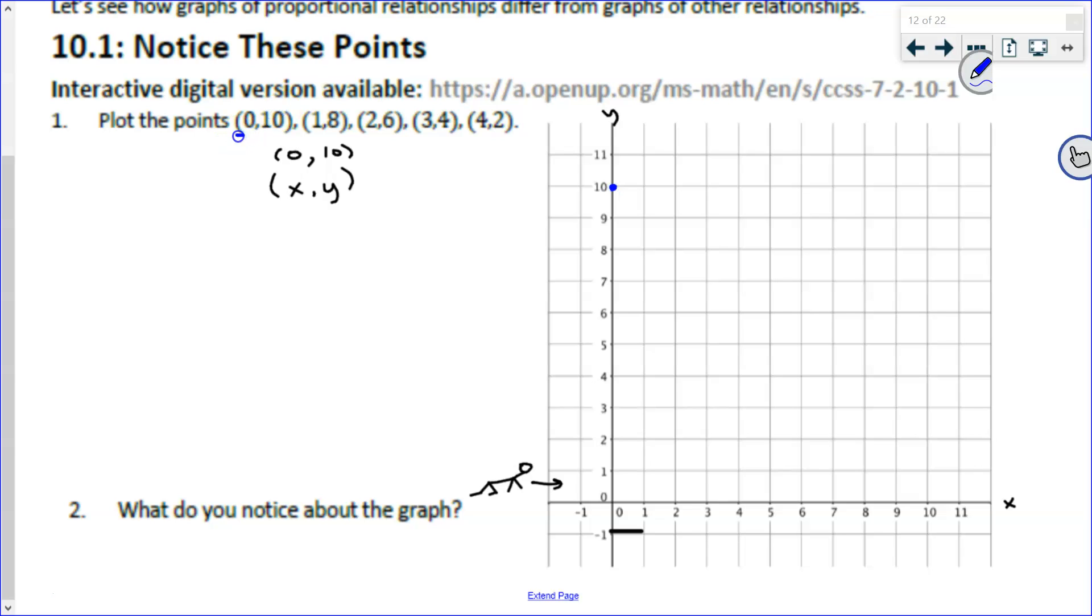So 0 comma 10 is over 0 and then up 10. Do you see why I had you do it in pencil? How many of you made mistakes? And then you second guessed yourself and then did it wrong. Okay. So continuing on, we have 1 comma 8. That means I'm going to go over first because I crawl over first and then I can climb up to the 8. 2 comma 6 would mean I'm going over 2, crawling over 2. And then after I've crawled over 2, then I can grow up and climb up to 6. 3 comma 4 over 3, up 4. And 4 comma 2 over 4 and then up 2.